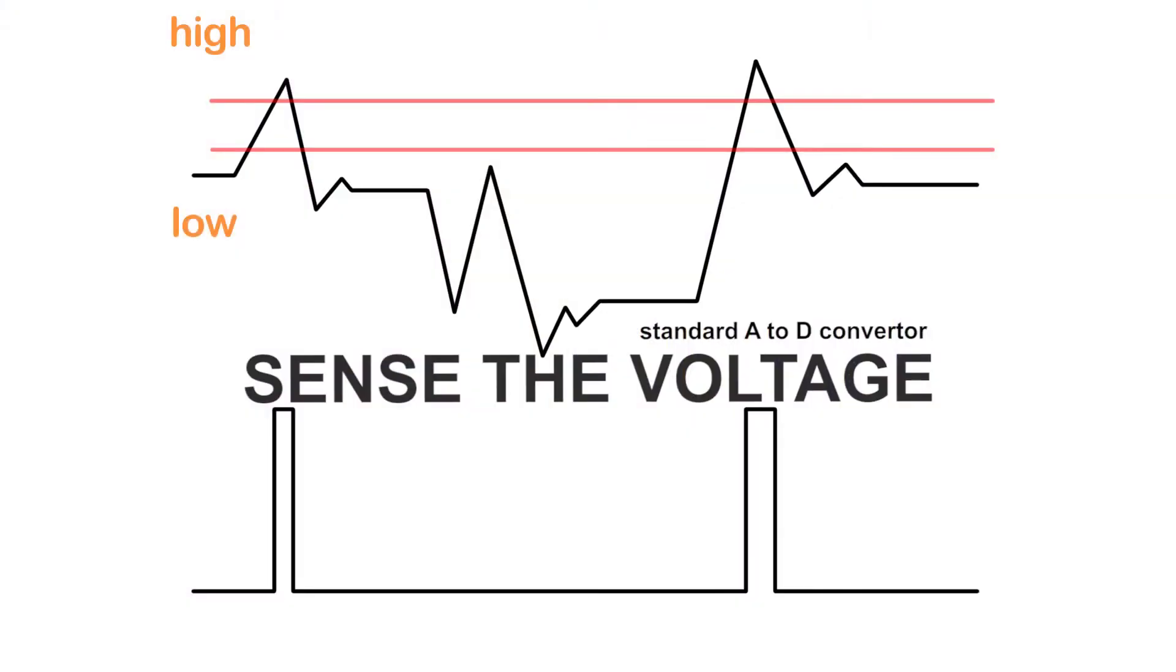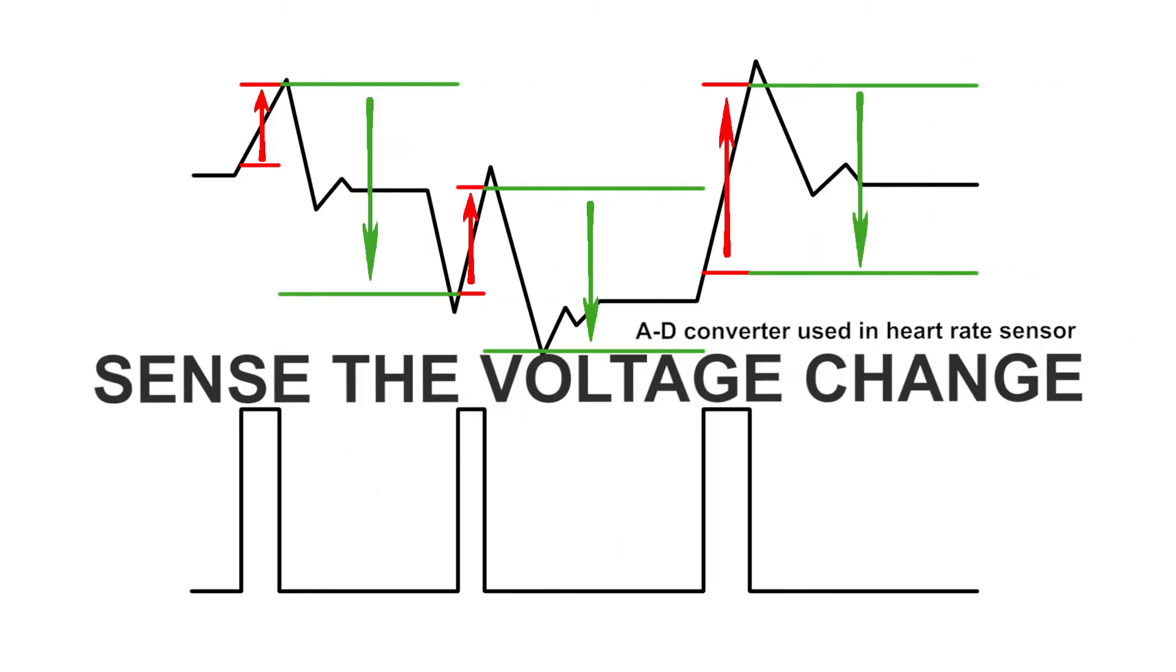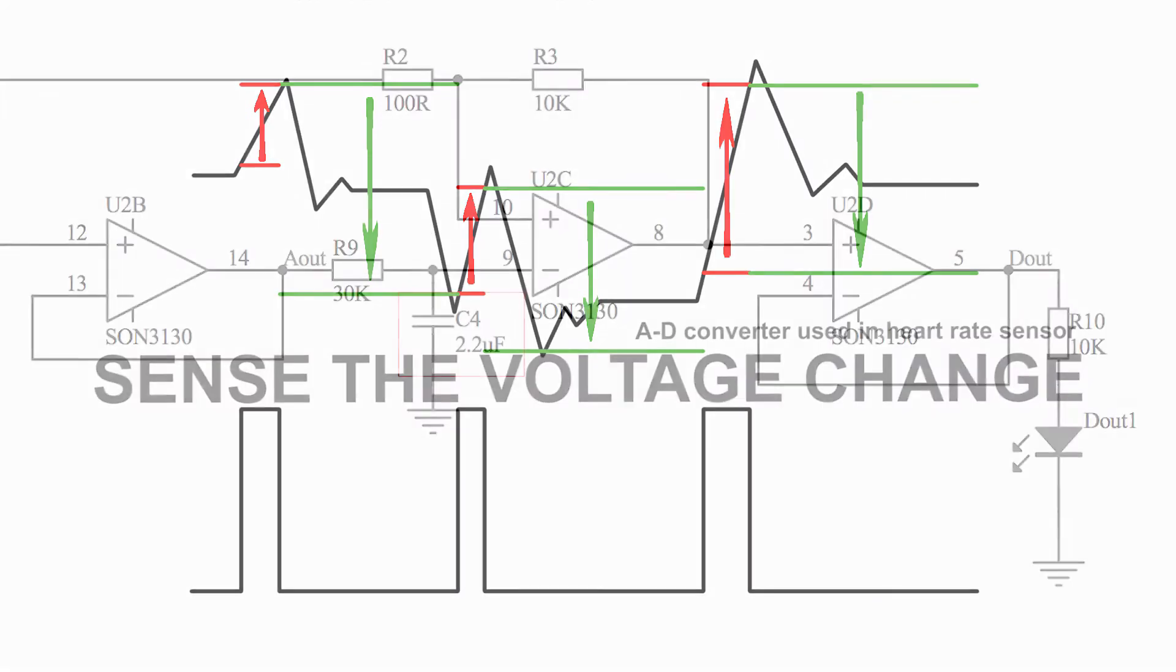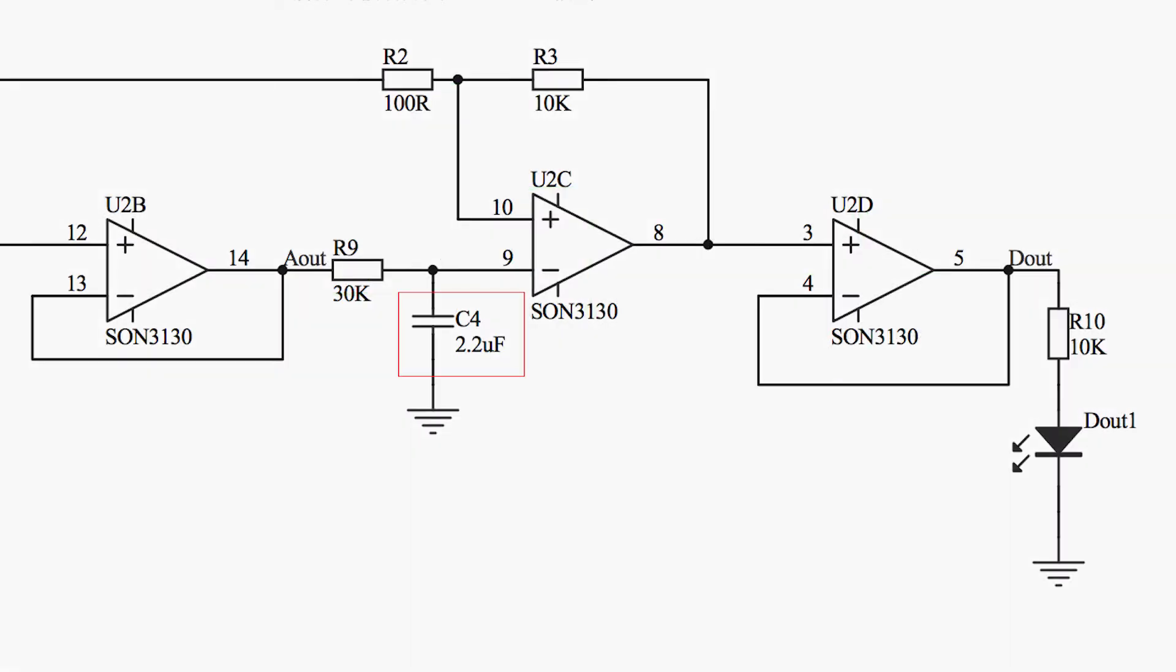To achieve this, a standard A-to-D converter is not enough, since the average voltage shifts throughout the time. Therefore, we need the A-to-D converter to sense the voltage change instead of the voltage itself. The following circuit is used to compare the voltage difference of the same analog signal but between short intervals, which tells us whether the voltage is going high or low.